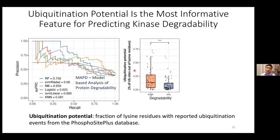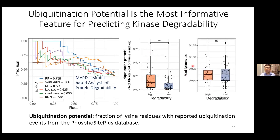We investigated which features are most important for predicting protein degradability and found that ubiquitination potential is the most informative feature. Ubiquitination potential is the fraction of lysine residues with reported ubiquitination events. Highly degradable kinases have significantly higher ubiquitination potential than lowly degradable kinases. In contrast, the total fraction of lysine sites shows no significant difference between the two groups, underscoring the specific importance of ubiquitination for targeted protein degradation.